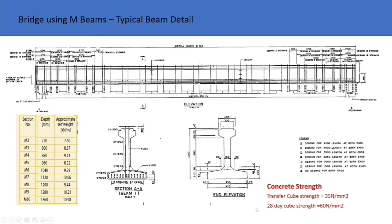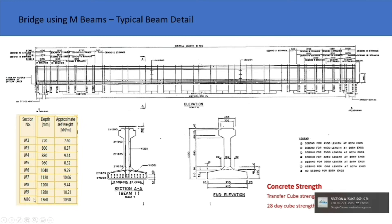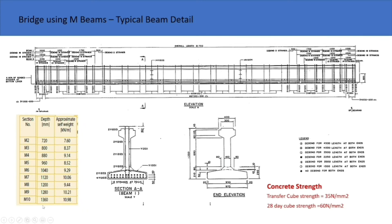The concrete strength used for the beam is defined as transfer cube strength equal to 35 Newton per millimeter squared, and 28-day strength to be 60 Newton per millimeter squared. There are various section types, with depth ranging from 720 millimeters to 1360 millimeters. The corresponding weight range is 7.6 kilonewton per meter to 10.98 kilonewton per meter.